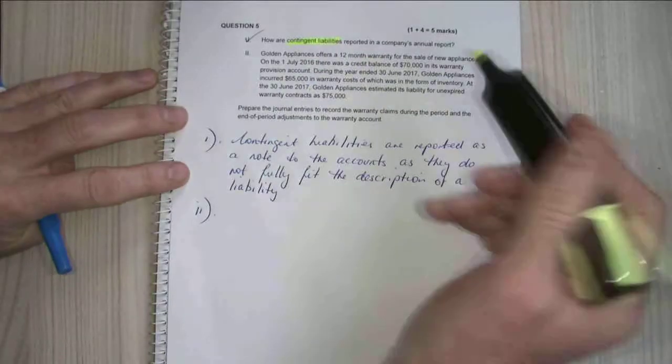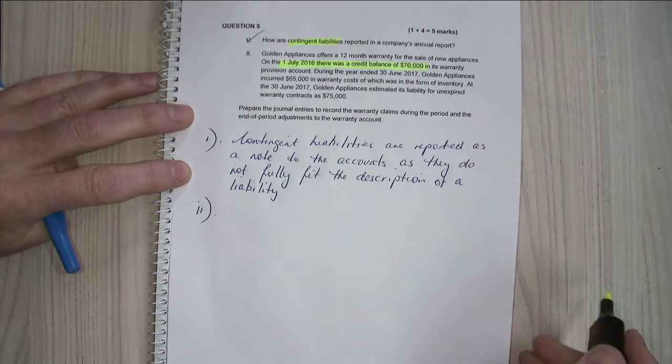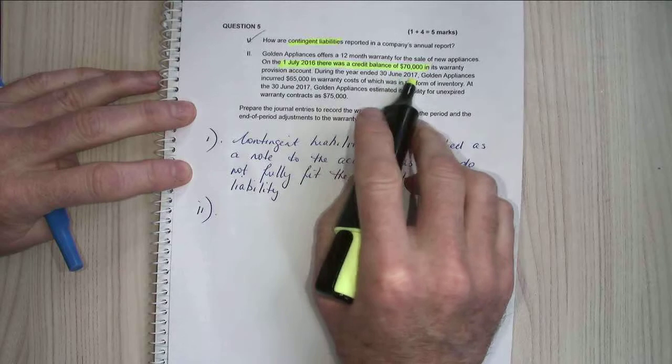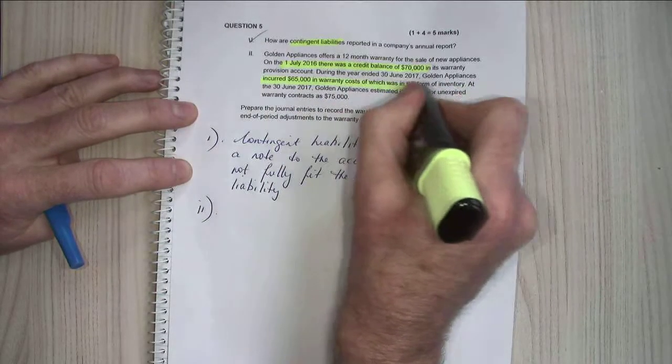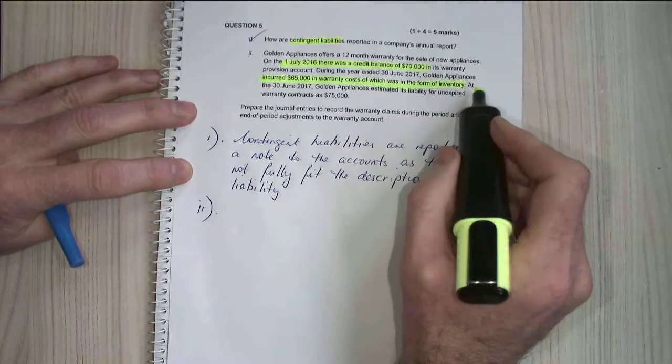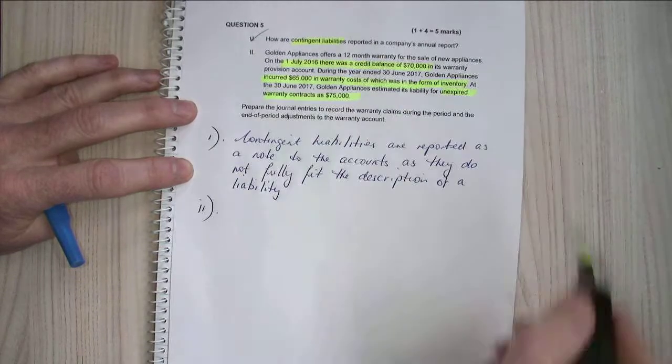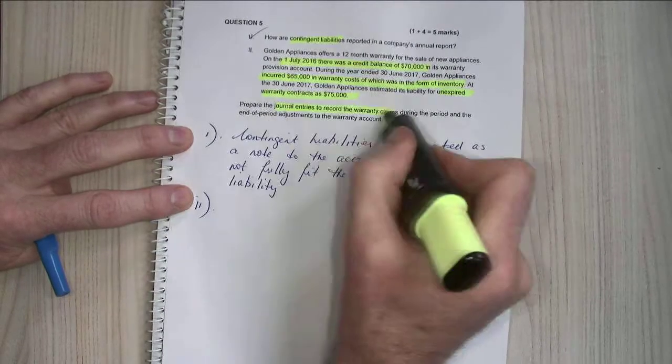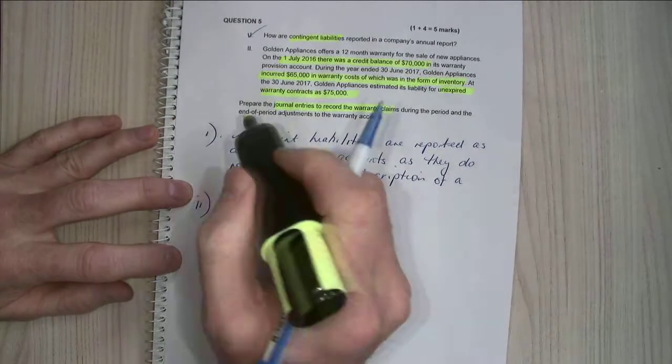So Golden Appliances offers 12-month warranty on its new appliances. On the 1st of July 2016, there's a credit balance of $70,000 in its warranty provision account. During the year ended 30 June 2017, Golden Appliances incurred warranty costs of $65,000 in the form of inventory. And at the 30 June, Golden Appliances estimated its unexpired warranty contracts to be $75,000. Prepare the journal entries to record the warranty claims during the period and the end of period adjustments to the warranty account.